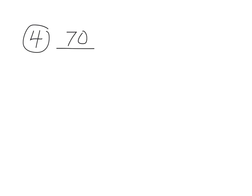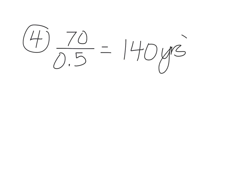Number four: how long will it take to double? Use the rule of 70 — take 70 divided by the growth rate for the Greater Los Angeles area. Note that number four just says Los Angeles but refers to the Greater Los Angeles area. Plug that into your calculator and the answer comes out in years: 140 years.